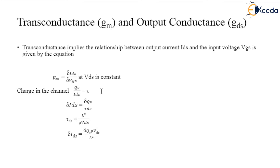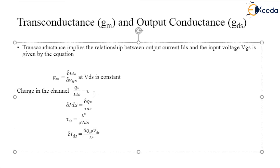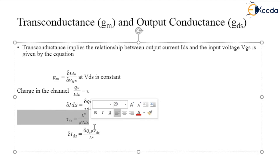From the basic formula Q = I × t, we can write the time constant tau = Q / I, where Qc is the channel charge and ids is the drain-to-source current. From this, the change in drain-to-source current delta ids is equal to the change in channel charge divided by tau.